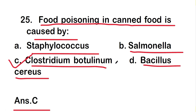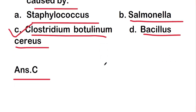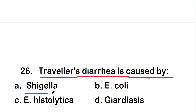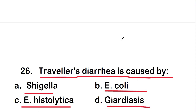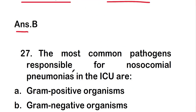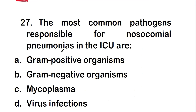Next question: traveler's diarrhea is caused by Shigella, E. coli, Entamoeba histolytica, or Giardiasis. The right answer is option B — E. coli. Traveler's diarrhea is caused by E. coli.